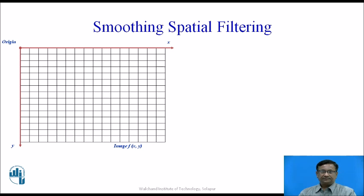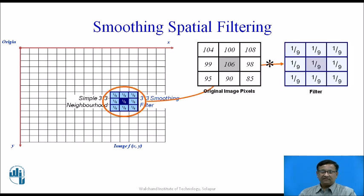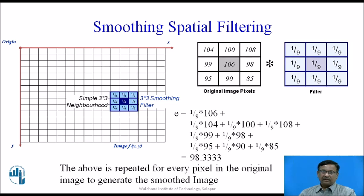Let us see how it works. These are sample image values of size 3x3. We multiply with the simple averaging filter mask containing values of 1/9. The corresponding pixels of the original image and filter mask are multiplied and added together. So the new value at the place of 106 will be 98.33, which is the average value in that neighborhood. This process is repeated for every pixel in the original image to generate the smoothed image.